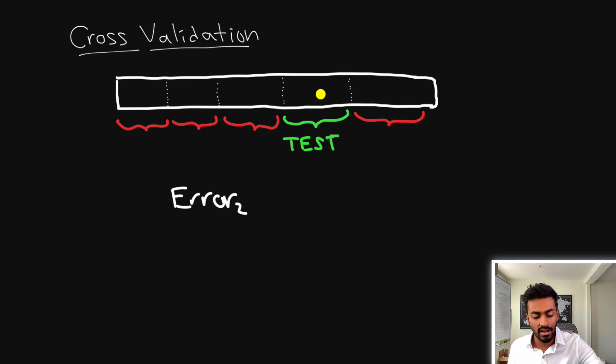However in this case we are now testing on data where the training set could have included data from the future. This is not representative of how we would actually use this model in the real world. We can't use training data that we haven't seen yet. And this is a good example of data leakage.